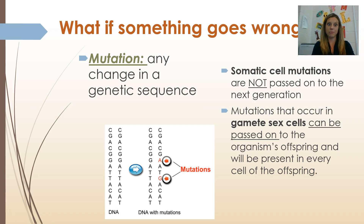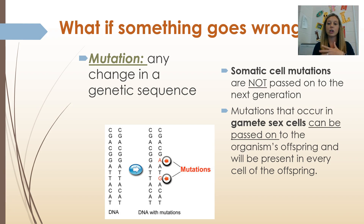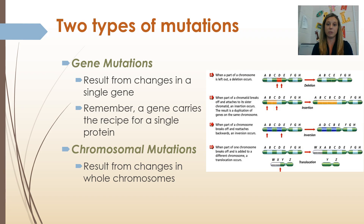What happens if something goes wrong? A change in a genetic sequence is called a mutation. If a mutation happens in a somatic cell, that's going to affect you the individual because those are your body's cells, but it's not going to be passed on to your future offspring. Mutations that occur in gametes — sex cells — can be passed on if the egg or sperm containing the mutation is the cell that gets fertilized, and then you're going to see that mutation in all of the offspring's cells. You should understand why mutations in gametes are passed on and mutations in somatic cells are not.